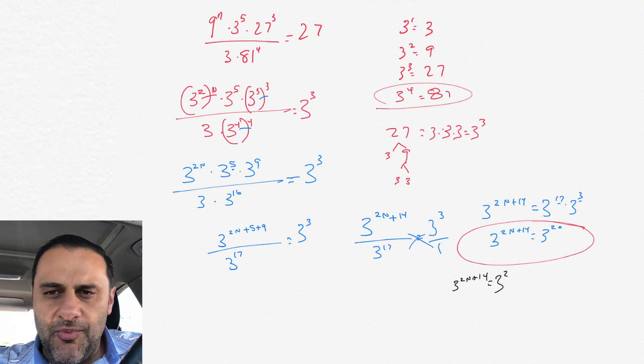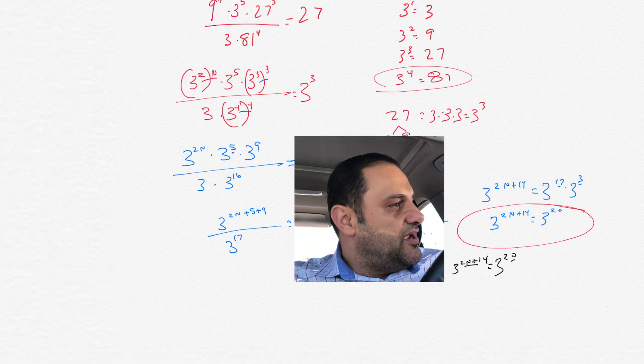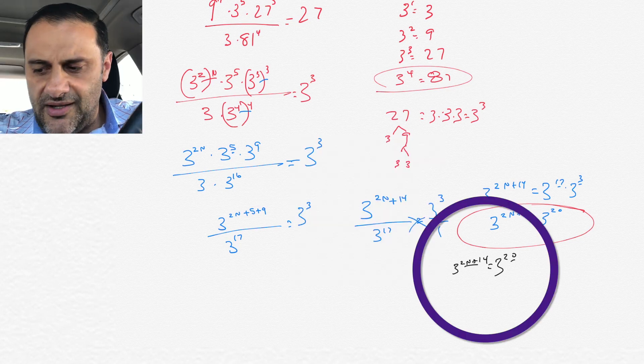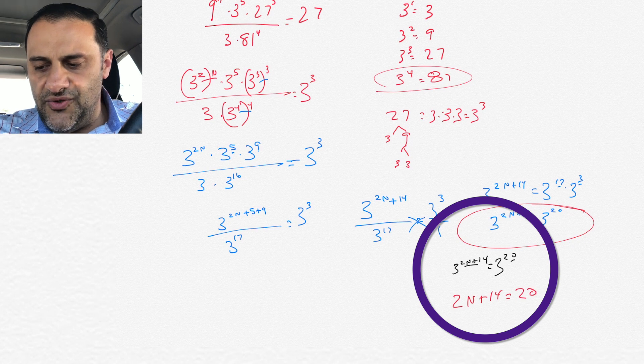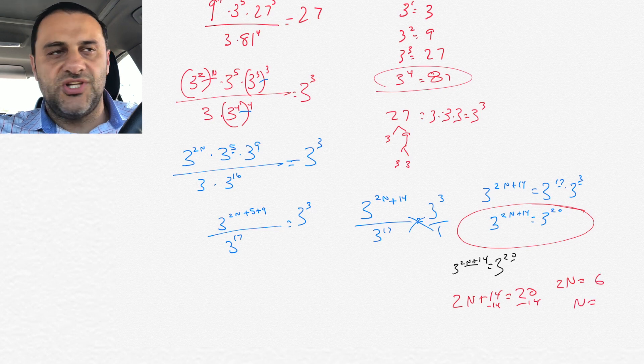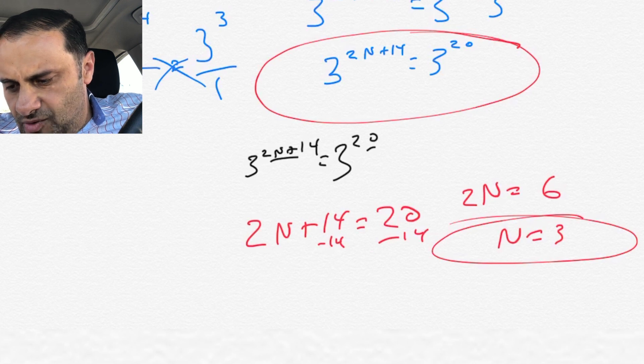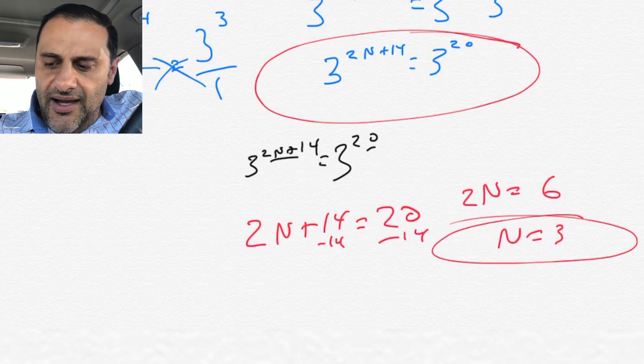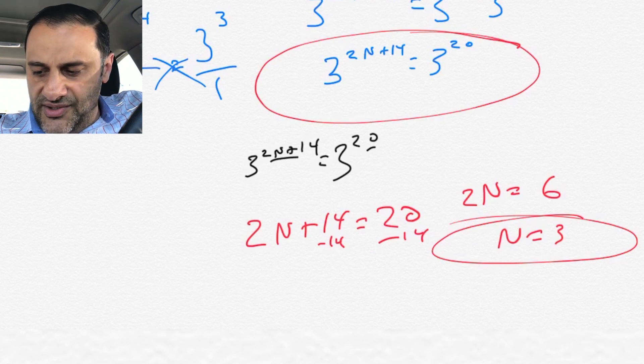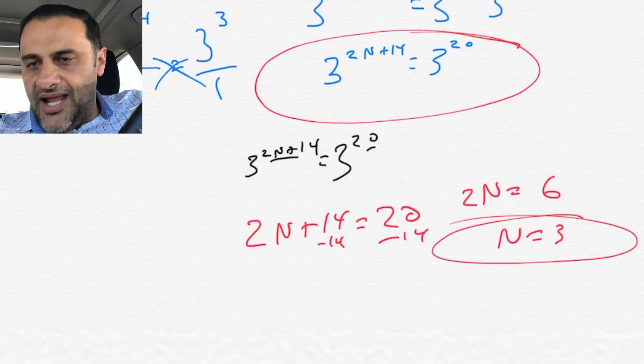When we have this set up, when the bases are the same, we have 3 to the 2n plus 14 equals 3 to the 20. What we can then do is we can set the exponents equal to each other. So we set 2n plus 14 equal to 20, and then at that point it's an algebra equation where we subtract 14 from each side. So we get 2n equals 6, and then we just divide 2 from each side, and we get n equals 3.